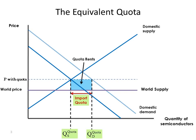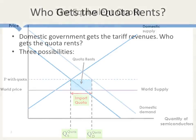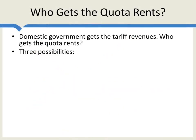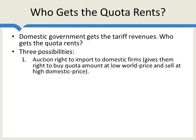Now I want to discuss who gets these quota rents. With a tariff, the domestic government gets the revenues. There are really three possibilities. First, a government could auction the right to import to domestic firms — giving them the right to buy the quota amount on the world market at the low world price and sell in the domestic market at the high domestic price.